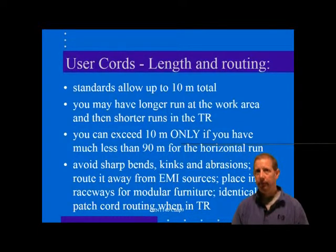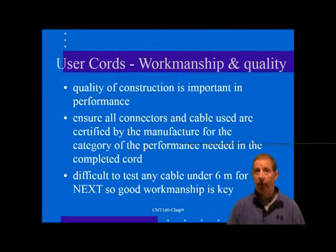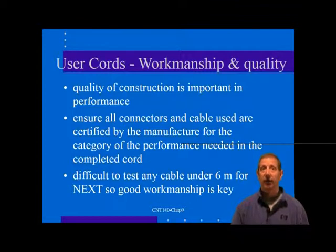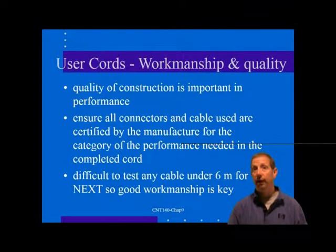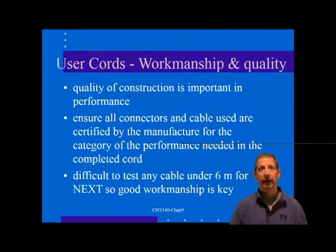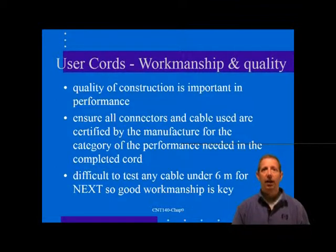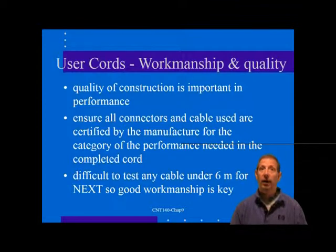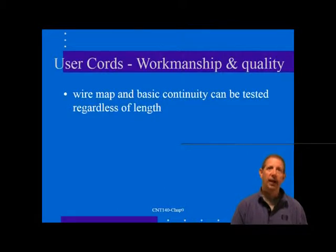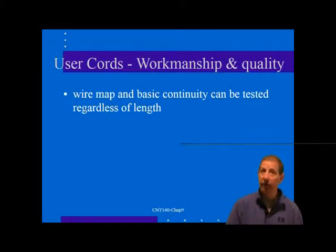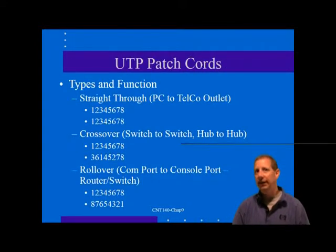Let's talk about workmanship and quality. If you build your own user cords or manufacture them for others, the quality of construction is a very important factor in the performance of the cords. You should first ensure that all connectors and cables used in the assembly are certified by the manufacturer for the level of performance that you desire for the completed cord. Then you should use proper techniques to assemble the cords for maximum performance. It is known to be difficult to test short lengths of cable, particularly with regard to near-end crosstalk, so your best performance guarantee is good workmanship. Basic continuity and wire map can be completely tested without regard to length. The section on patch cords in chapter 8 and the earlier section on modular connectors in this chapter describe some techniques to ensure a high-quality termination that will perform up to the specifications needed.